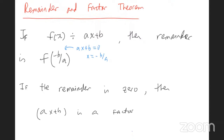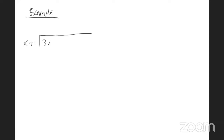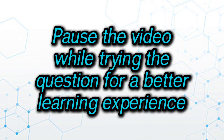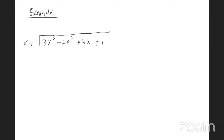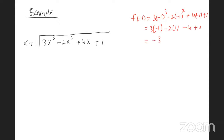Let's see if we can do this — find the remainder for 3x³ - 2x² + 4x + 1 divided by (x + 1) using long division. The short way to check your answer is to plug in minus 1. So on the side, use the theorem: find f(-1). That gives us -3 - 2 - 4 + 1, which looks like minus 8.